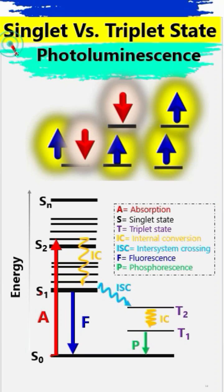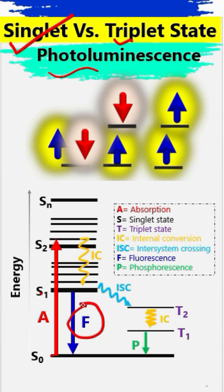Let's differentiate between singlet states and triplet states and why it is important to discuss in photoluminescence. In photoluminescence there are two types of emissions. The first one is fluorescence, which occurs when electrons drop from the singlet excited states to the ground states.